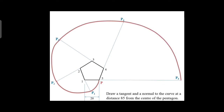Draw a tangent and normal to the curve at a distance 85 mm from the center of the pentagon. Locate the center of the pentagon: from point 1, draw a perpendicular line to the opposite side; from point 2, draw a perpendicular line to the opposite side 4-5. The two lines intersect — that point is the center of the pentagon. With O as center and 85 mm as radius, draw an arc on the involute curve — the intersecting point is M. Join 4 and M, extend the line — this is the normal line. Draw the tangent line through M perpendicular to the normal — that is line TT dash.